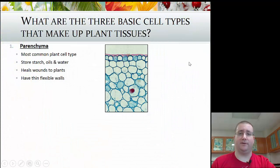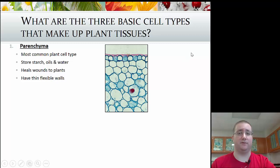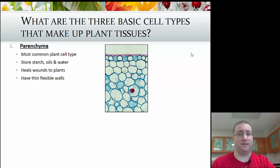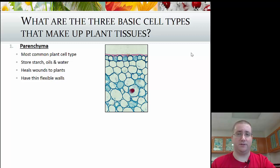If you look at an entire organism, an organism is made up of a group of organ systems such as your nervous system, your respiratory system, your cardiovascular system, your urinary system. Each organ system is made up of individual organs like the kidney, the liver, the heart. Each individual organ is made up of tissues, which are cell types that have a similar type and do a similar function. And then each tissue is made up of individual cells.